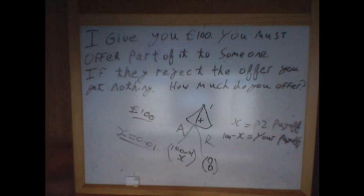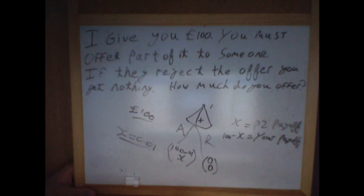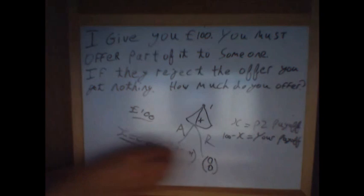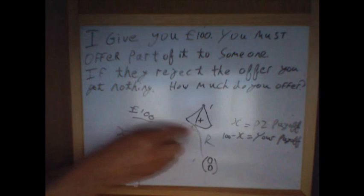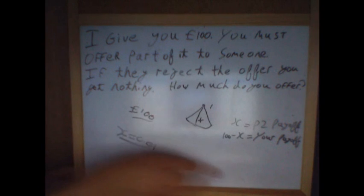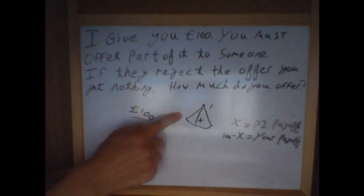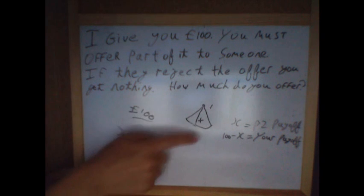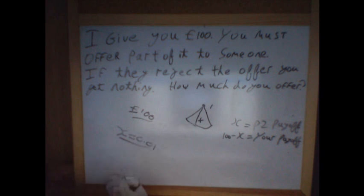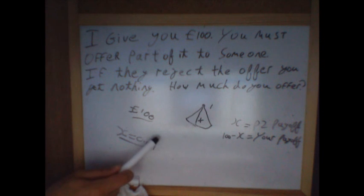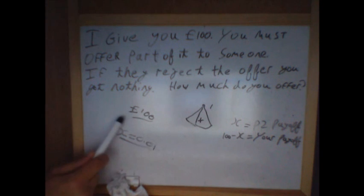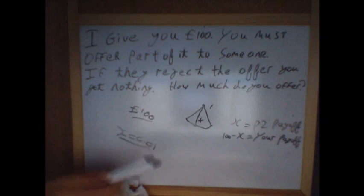There are various extensions and variations to the ultimatum game which they may or may not explore in the interview. For example, there's one simpler game called the dictator game, where there is no second stage — you simply give an offer, they don't have the choice to reject, and must accept whatever you give. Evidence surrounding the dictator game lends some support to rational behaviour, as it's found that offers are generally much lower.